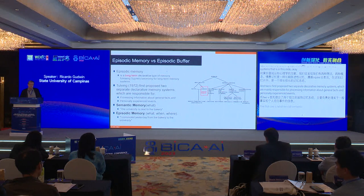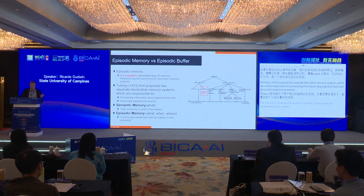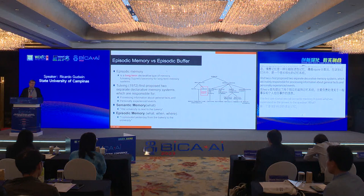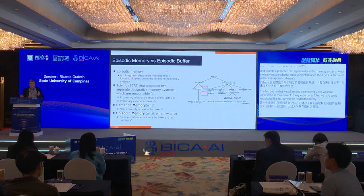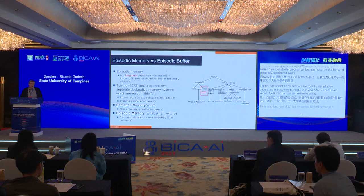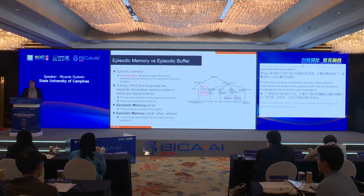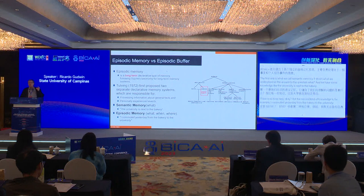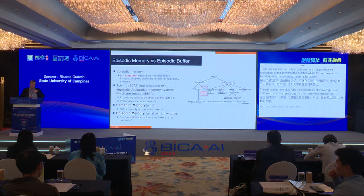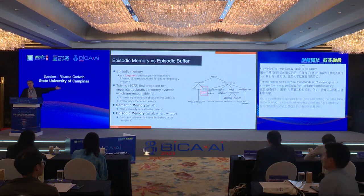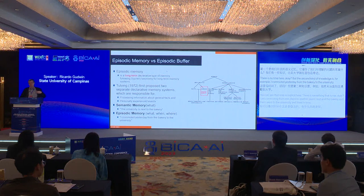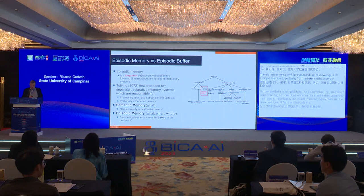Tulving first proposed two separate declarative memory systems responsible for processing information about general facts and personally experienced events. The first is semantic memory, which stores the answer to the question 'what?' The second is episodic memory — for example, 'I commuted yesterday from the bakery to the university.' Time is implicit here: I moved from one place to another, and time is changing my position in the environment. This is basically what is encoded into episodic memory.